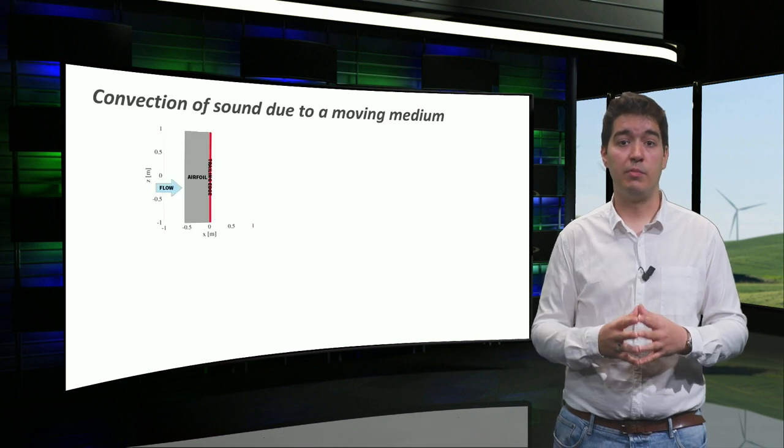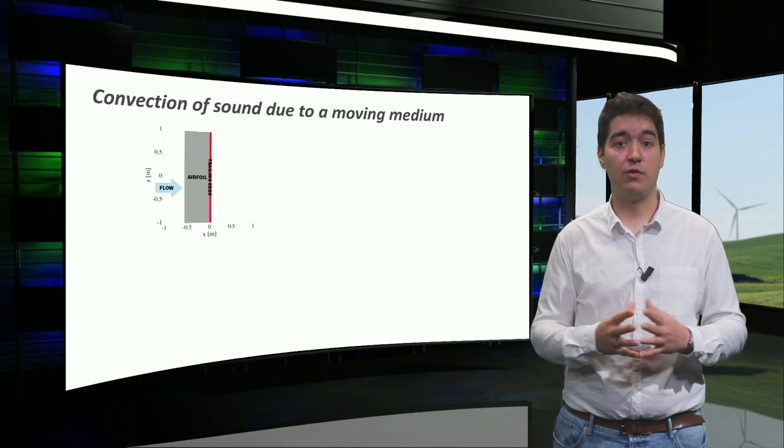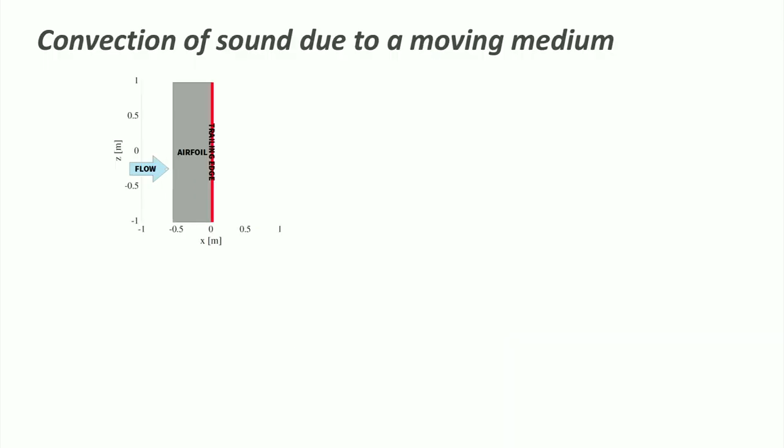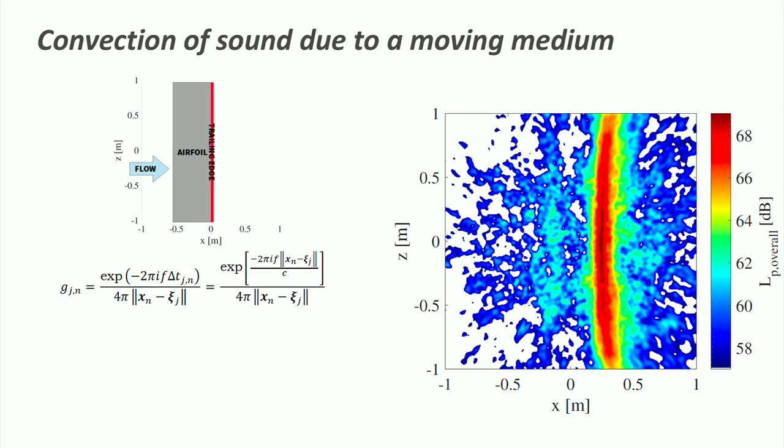Another consideration for beamforming in wind tunnels is the convection of the sound due to the presence of wind. Imagine an airfoil emitting trailing edge noise inside a wind tunnel. If we do not take into account the moving medium, the source map is shifted in the stream-wise direction from the correct position.